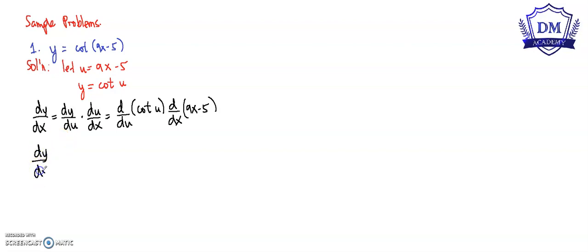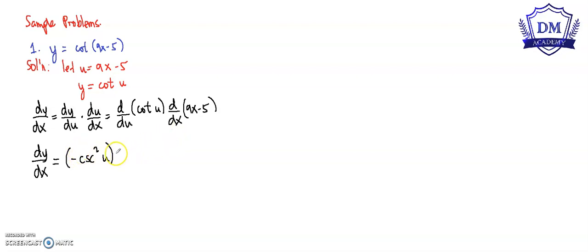Our dy over dx is equal to the derivative of cotangent u, which is negative cosecant squared u. So we have negative cosecant squared u multiplied by the derivative of 9x minus 5, which is 9.